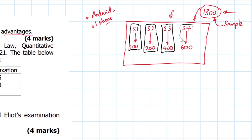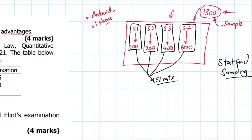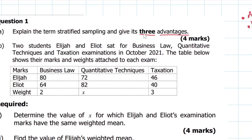We have chosen to divide this population into four segments according to their classes. Because we have divided the classes into four segments, these four segments are what we are calling strata. This is where the term stratified sampling comes from — that is what the question is asking us to explain.